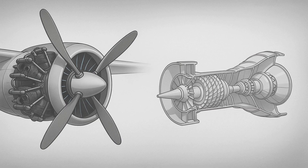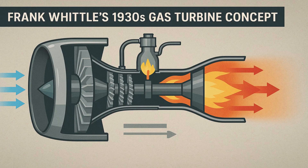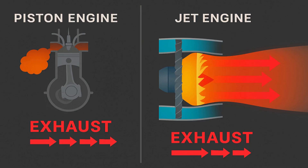Before the jet age, airplanes relied on piston engines driving propellers. Those engines worked well at low speeds but lost efficiency as planes climbed higher. In the late 1930s, Frank Whittle in England and Hans von Ohain in Germany each built a practical gas turbine in parallel efforts. Their designs replaced reciprocating pistons with spinning turbines. By compressing air, injecting fuel, igniting it, and using the hot exhaust to spin turbines, they created a lighter, more powerful engine. Within a decade, jets halved transcontinental flight times and made global travel routine.